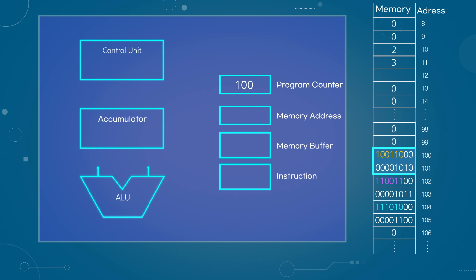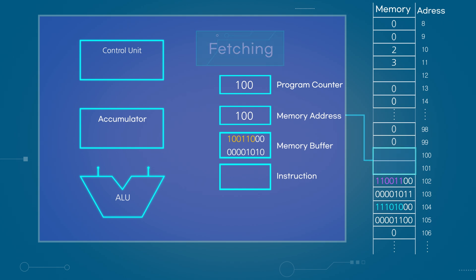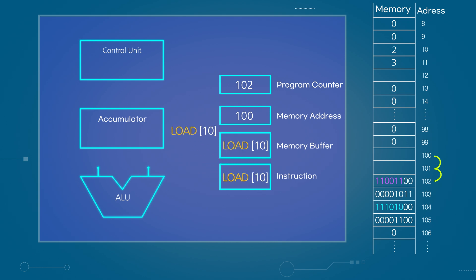The program counter contains the address of the memory location to be fetched. This address is passed to the memory address register, which retrieves the data from memory address 100 and stores it in the memory buffer register. This process of fetching data from memory into the CPU is called fetching. Since machine code is difficult to interpret, let's translate it into readable instructions. This particular instruction is a command to fetch data from memory address 10, so it is sent to the instruction register. Then, two is added to the program counter, because the next memory location to be executed is two addresses below the previous one. For a 32-bit processor, which can handle four memory addresses at once, four is added.